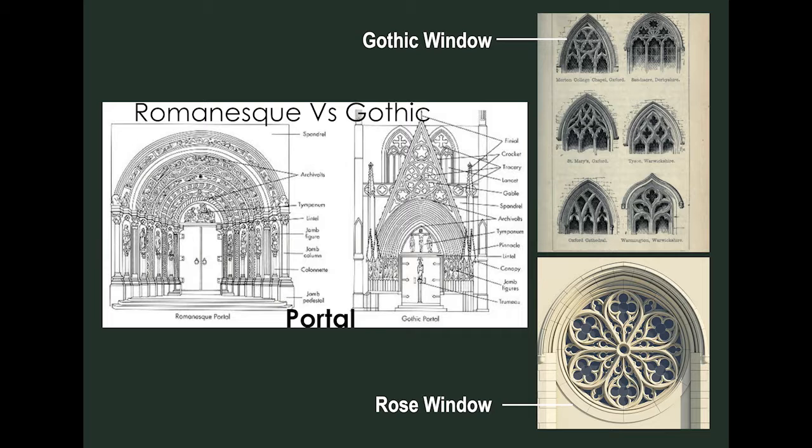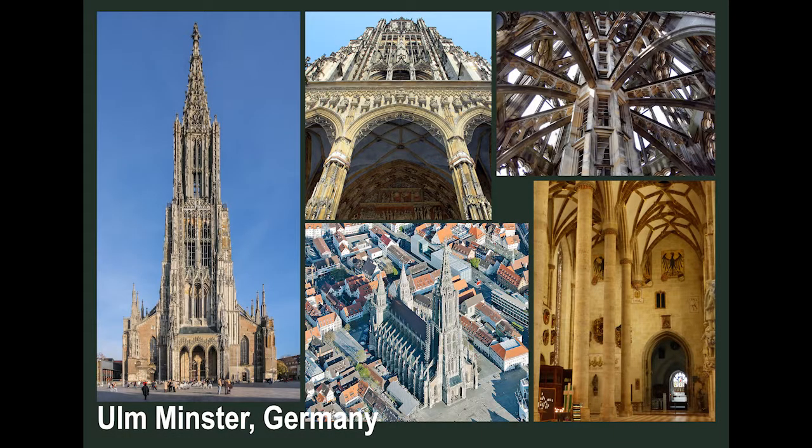Another feature was the use of realistic statuary on the exterior, particularly over the portals, to illustrate biblical stories for the largely illiterate parishioners. These technologies had existed in Romanesque architecture, but were used in more innovative ways and more extensively in Gothic architecture to make buildings taller, lighter, and stronger. An important characteristic of Gothic church architecture is its height, both absolute and in proportion to its width, the verticality suggesting an aspiration to heaven.